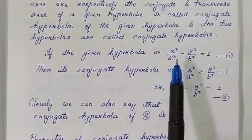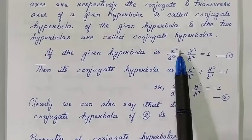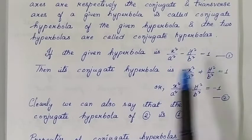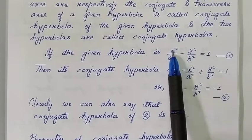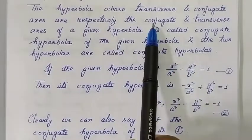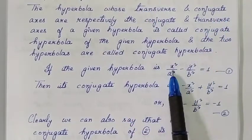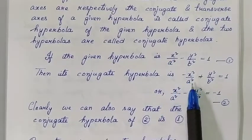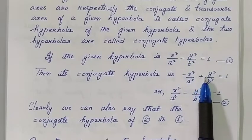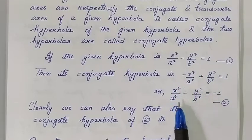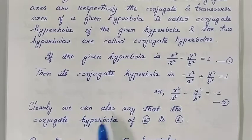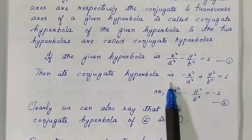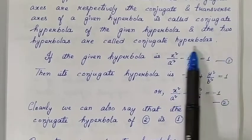Consider the standard form of a hyperbola: x²/a² − y²/b² = 1. To find its conjugate hyperbola, we swap the roles of the axes per the definition — replacing x² with −x²/a² and y² with +y²/b². After simplifying, we get −x²/a² + y²/b² = 1, or equivalently x²/a² − y²/b² = −1. So the conjugate hyperbola of x²/a² − y²/b² = 1 is x²/a² − y²/b² = −1.